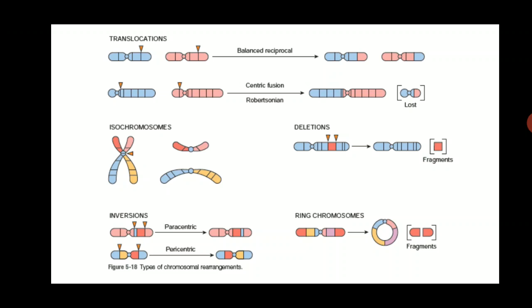The most common structural abnormality of chromosomes are translocations. A part of one chromosome breaks and moves to another chromosome. If parts of two chromosomes break and interchange, it is known as a balanced reciprocal translocation. Sometimes the breakpoint creates a very large chromosome and a very small chromosome; the small chromosome is usually lost from the cell during the cell cycle. Such translocations are known as Robertsonian translocations.